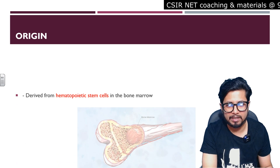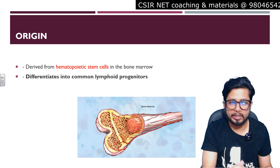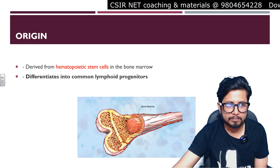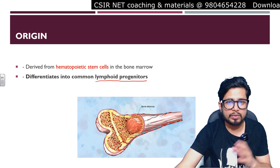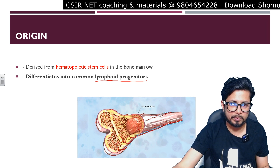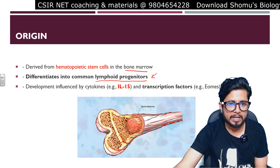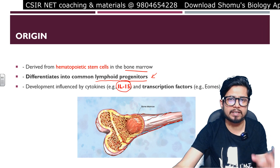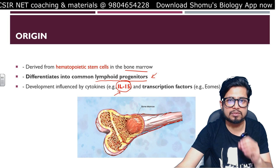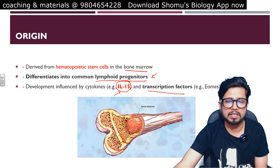The natural killer cells are derived in our bone marrow from the hematopoietic stem cells, and then they differentiate into common lymphoid progenitor cells. The lymphoid progenitor is the ultimate fate from where the natural killer cells are going to be produced. Their development is influenced by interleukin-15, which triggers and influences the growth and development of natural killer cells, along with some transcription factors recognizable through transcriptome analysis.